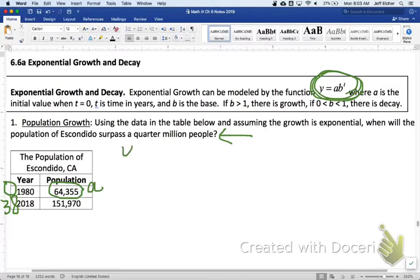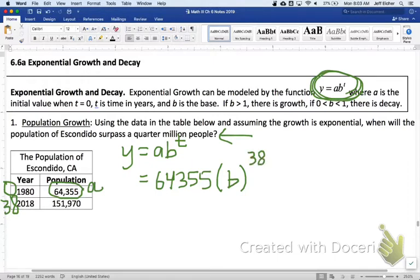We mentioned earlier that our a value is this. This is when t is zero, and this is t is 38. So, we're going to write our general formula, y equals ab to the t. And our a value is 64,355.